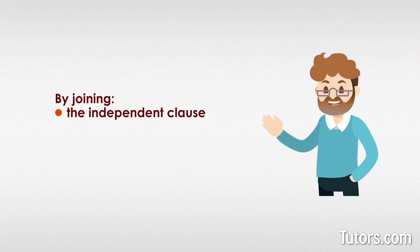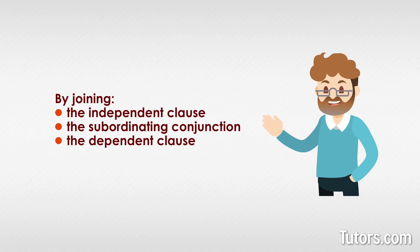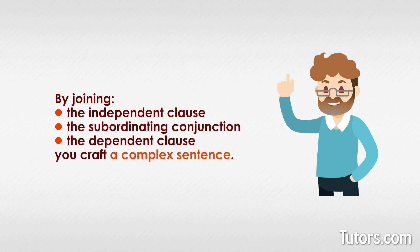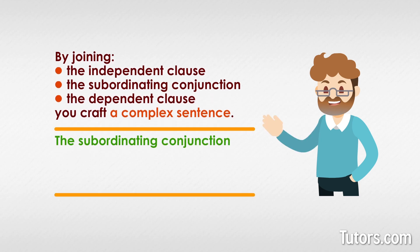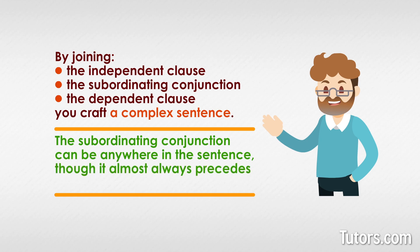By joining the independent clause, the subordinating conjunction, and the dependent clause together, you craft a complex sentence. When studying other writers' works, you recognize the complex sentence by seeing all three elements. Keep in mind, the subordinating conjunction can be anywhere in the sentence, though it almost always precedes the dependent clause.